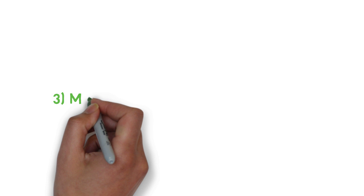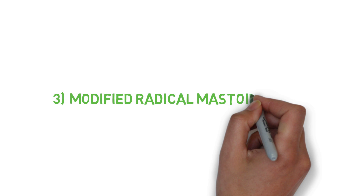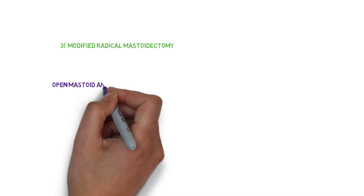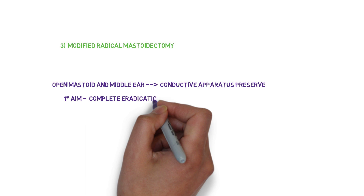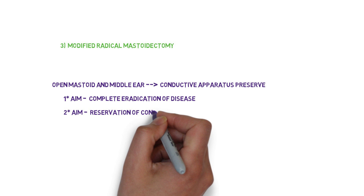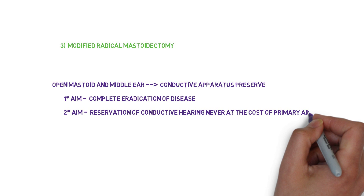The third type is modified radical mastoidectomy, in which we open the mastoid and middle ear and always preserve the conductive apparatus. If the apparatus is damaged, it is repaired first. The primary aim of this method is complete eradication of disease, and the secondary aim is preservation of conductive hearing — but never at the cost of the primary aim.